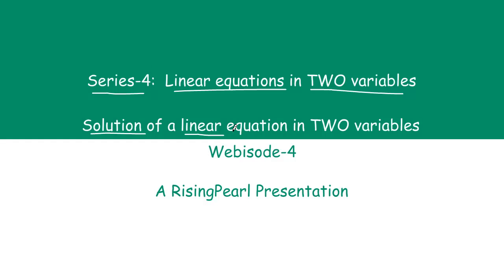We have talked about webisode 1, 2, and 3. In webisode 1 and 2 we talked about recap of linear equation in one variable — what it is, how we create our equation in one variable when a problem is given, and how we solve them. In webisode 3 we talked about linear equation in two variables: what it is, why we need it, and how we can write it in standard form.